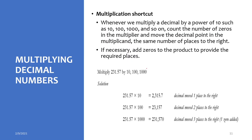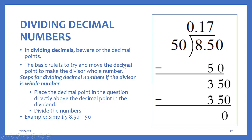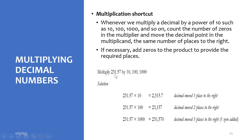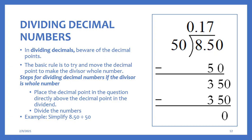Shortcut for multiplication: when multiplying by multiples of 10, all you do is move the decimal point to the right. For 231.57 × 10 — one zero, move the decimal point one place right: 2315.7. For × 100 — two zeros, move two places: 23157. For × 1000 — three zeros, move three places: there is no digit so add a zero: 231570.